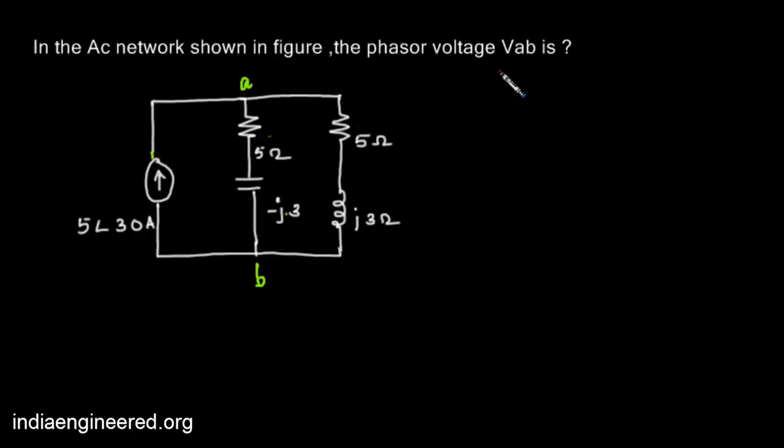Now what is Z1? The branch impedance here is Z1, then Z1 will be 5-3J. What will be Z2? This is Z1 and this is Z2, so Z2 will be 5+3J.